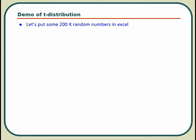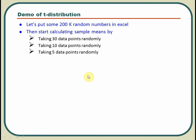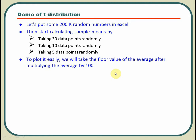We are going to generate 200 random numbers in Excel, then we will be taking sample means. For the first set we will take 30 data points and take the average, then 10 data points and take the average, then 5 data points randomly and take the average. We are going to see what distribution it follows. We will multiply the averages by 100 and take the floor value, so that values remain in the range of 00 to 99.